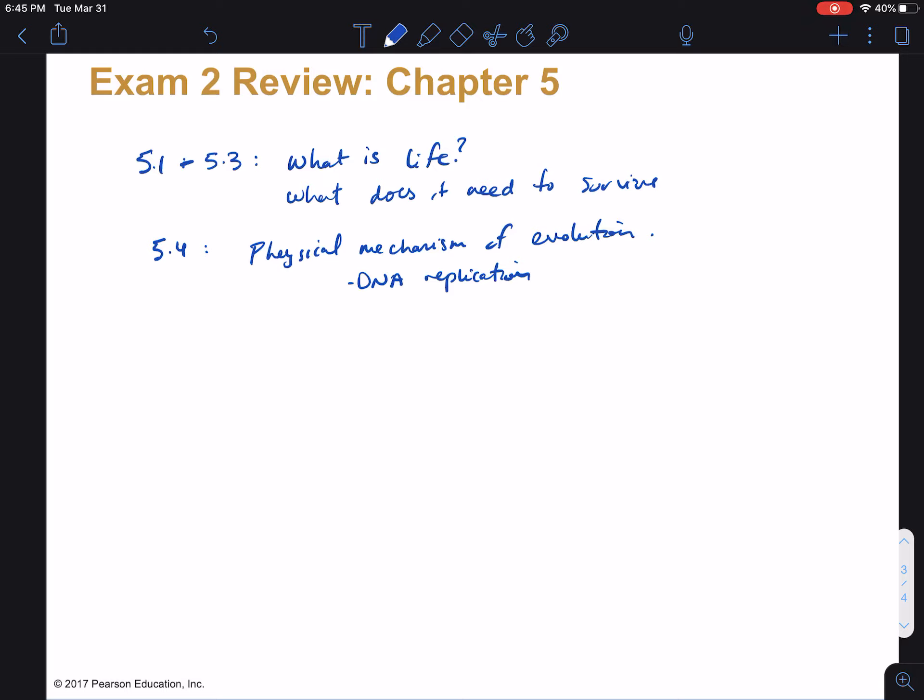And then we talked about lastly in 5.5, what environments can life survive in? And then we skipped 5.6. Again, I won't expect you to know that stuff for the exam. So again, one more time, big picture, chapter 5 was all about life, defining life, what is life, what does it need to survive, and where are the places it can survive in.